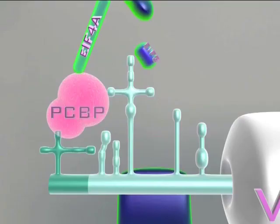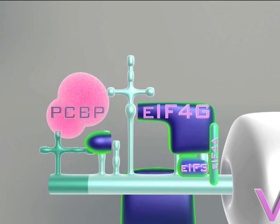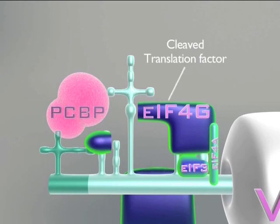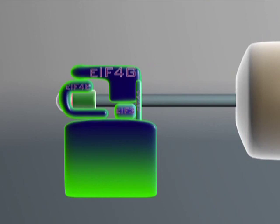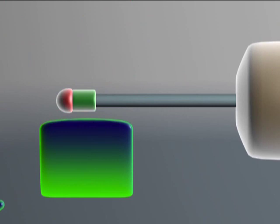The 2A protease also has the task of cleaving one of the translation factors, which bind the ribosome to the messenger RNA. For an IRES-dependent translation, as with polio, this creates no problems, but it makes cap-dependent translation impossible. These cellular proteins cannot be used anymore for the cell's own protein synthesis. Consequently, there are more ribosomes available in the cell to translate the viral RNA.